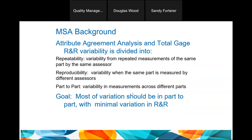Either one of these — gauge R&R or attribute agreement analysis — has three parts: two are bad and one is good. If repeatability is too poor, or reproducibility is too poor, relative to part-to-part variability, you cannot trust your measures. The measurements will vary widely, and the measurement process will hide the actual part-to-part variation, which obviously impedes good control.